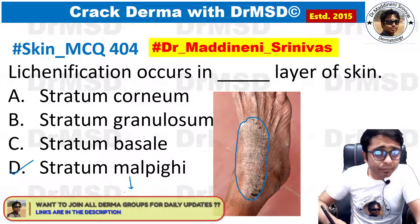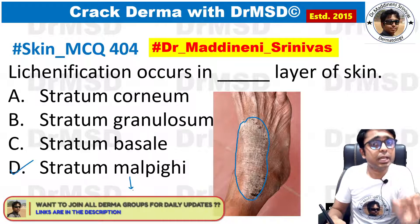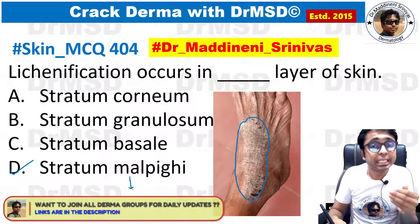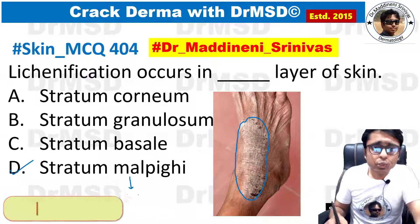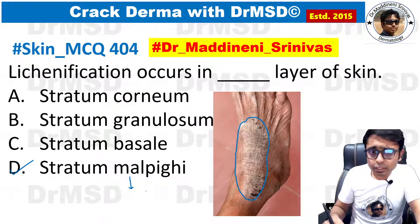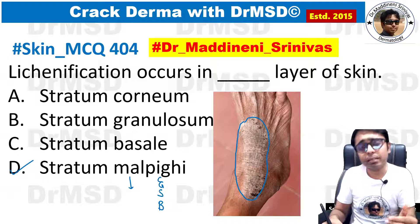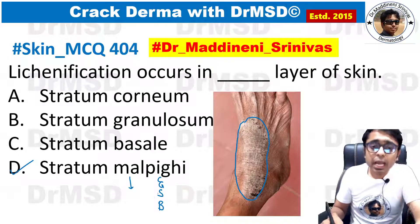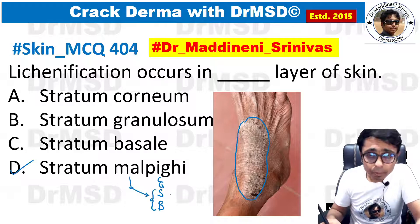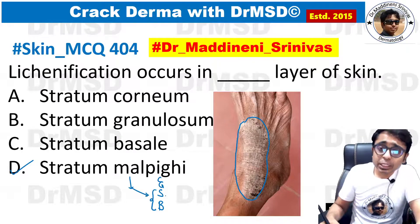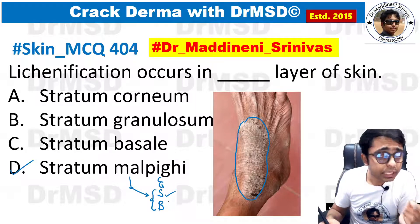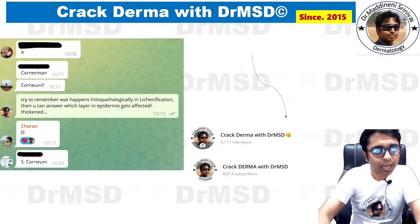The entity that combines both stratum basale and stratum spinosum is called stratum malpighii. The layers of the epidermis from below upwards are: stratum basale, spinosum, granulosum, and stratum corneum. Stratum basale and spinosum put together is stratum malpighii. Since acanthosis involves stratum spinosum, we mark option D — stratum malpighii — as our answer.